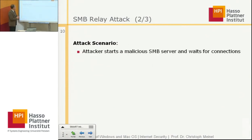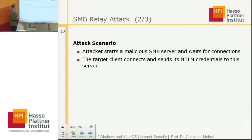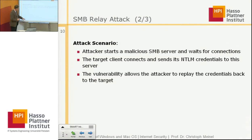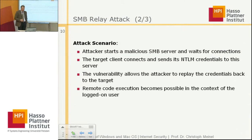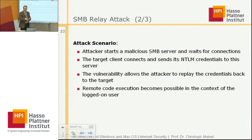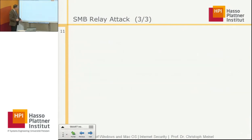Here is the attack scenario. The attacker starts a malicious SMB server and waits for connections. The target client connects to the malicious server and sends its NTLM credentials to the server. The vulnerability allows the attacker to relay these credentials back to the target, and in this way gain access to the target system. Remote code execution is possible in the context of the logged-on user.